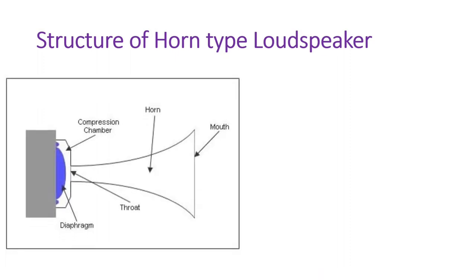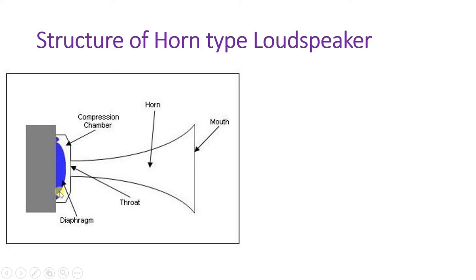Let us see the structure of horn type loudspeaker. There is a speaker with a diaphragm that generates sound. That generated sound first goes into the compression chamber. There is a throat of the horn, and through the throat the sound wave is guided and released through the mouth. There is no vibration of the horn. In cone type, the cone is connected with the diaphragm — both vibrate and generate sound — while in horn type the horn is just guiding sound produced by the speaker.